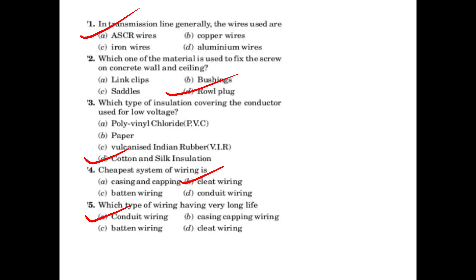This is cotton and silk insulation. Number two: which is the cheapest system of wiring? The cheapest method of wiring is cleat wiring. Which type of wiring has a very long life? Conduit wiring has a very long life.